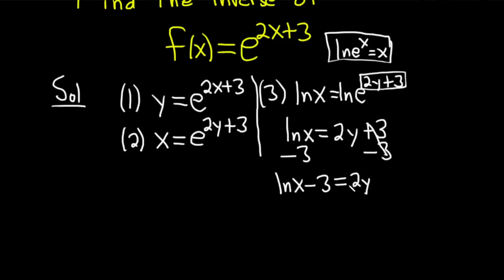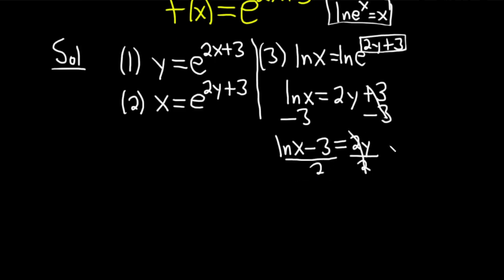And we're almost done, right? The y is being multiplied by 2. So to get rid of that, we'll divide by 2. Divide by 2. We have y equal to all of this. So I'm going to write it with the y on the left-hand side. So y is equal to ln x minus 3 divided by 2.